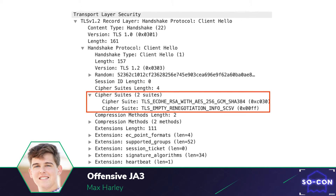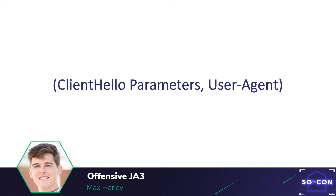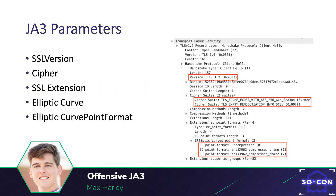The genius that the folks at Salesforce had was recognizing that client libraries typically use the same client hello parameters. If enough client hello packet and client library pairs are gathered, a blue teamer can figure out what type of client is communicating with the server just using the client hello packet. The parameters JA3 uses for its signature are the SSL version, the cipher, the SSL extension, elliptic curve, and elliptic curve point formats.